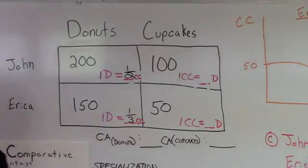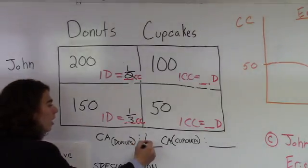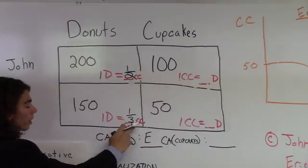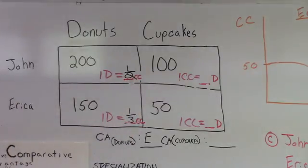So, who has the comparative advantage in donuts? Can you fill in that little thing at the bottom? Who has the comparative advantage in donuts, which was the question B? So, Erica has the comparative advantage in donuts because her opportunity cost one-third of cupcakes is lower than John's opportunity cost one-half of cupcakes. That's a great explanation, and that totally explains question B.